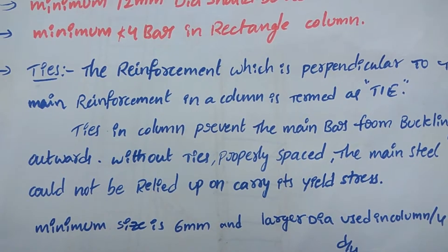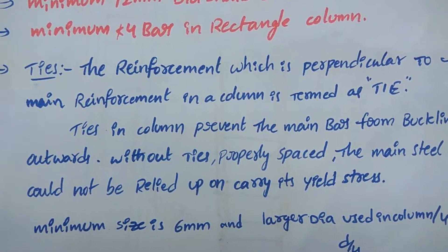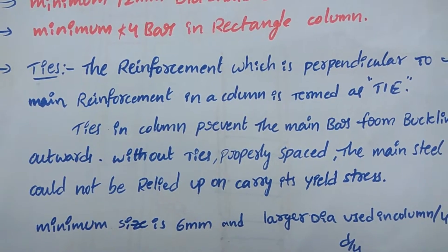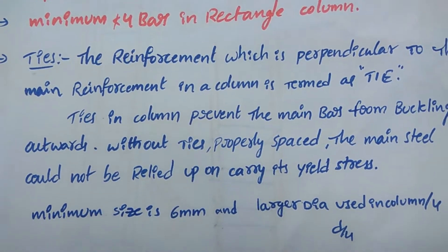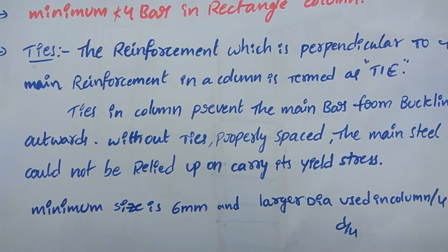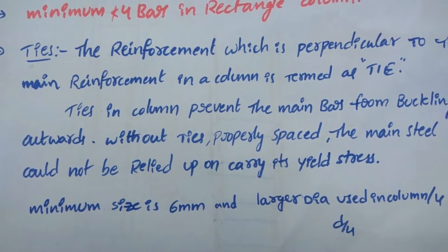Minimum size of ties used is 6mm, and for larger diameter bars used in a column, the tie diameter is D by 4.